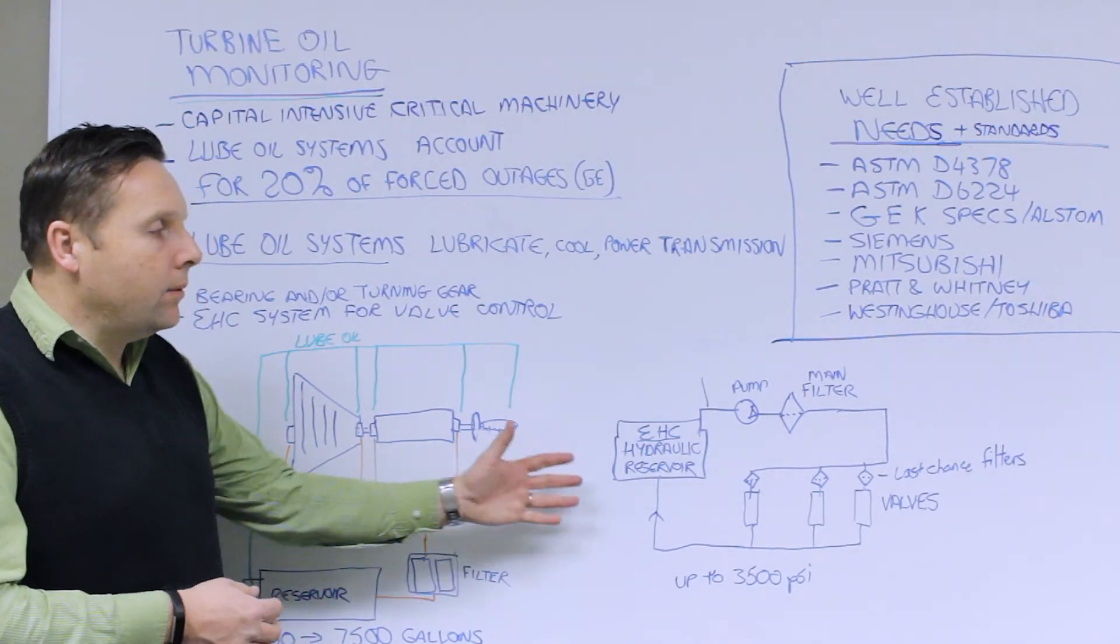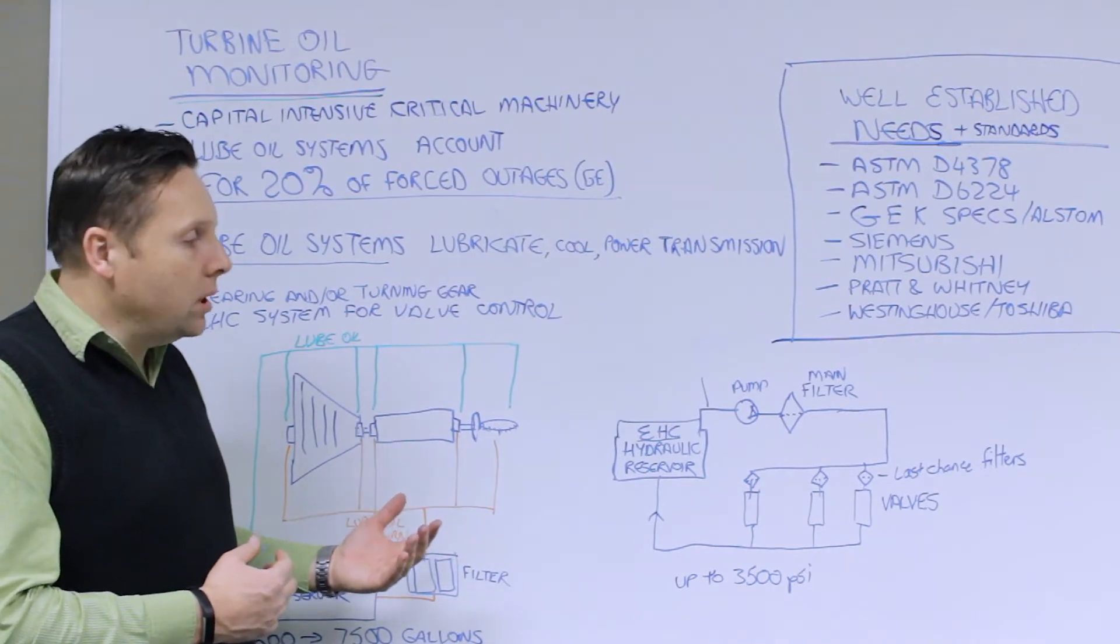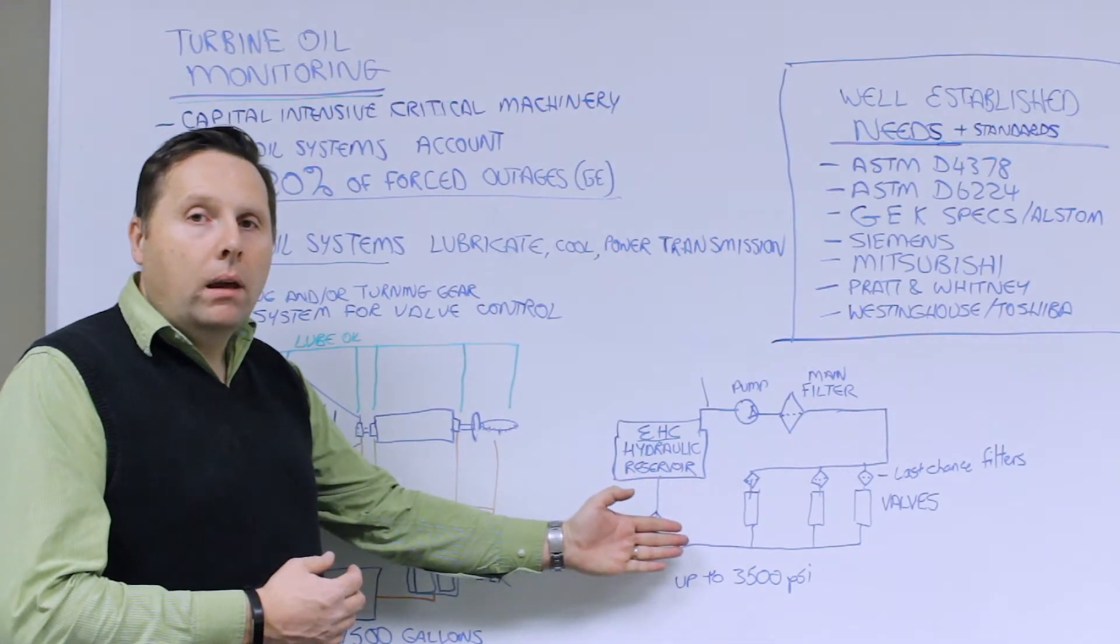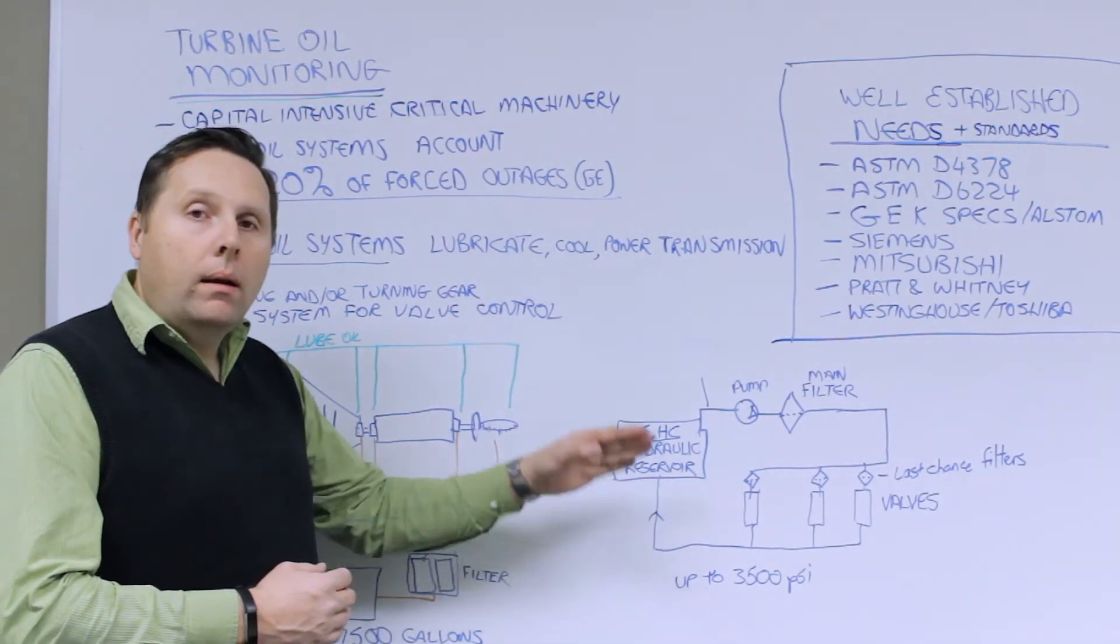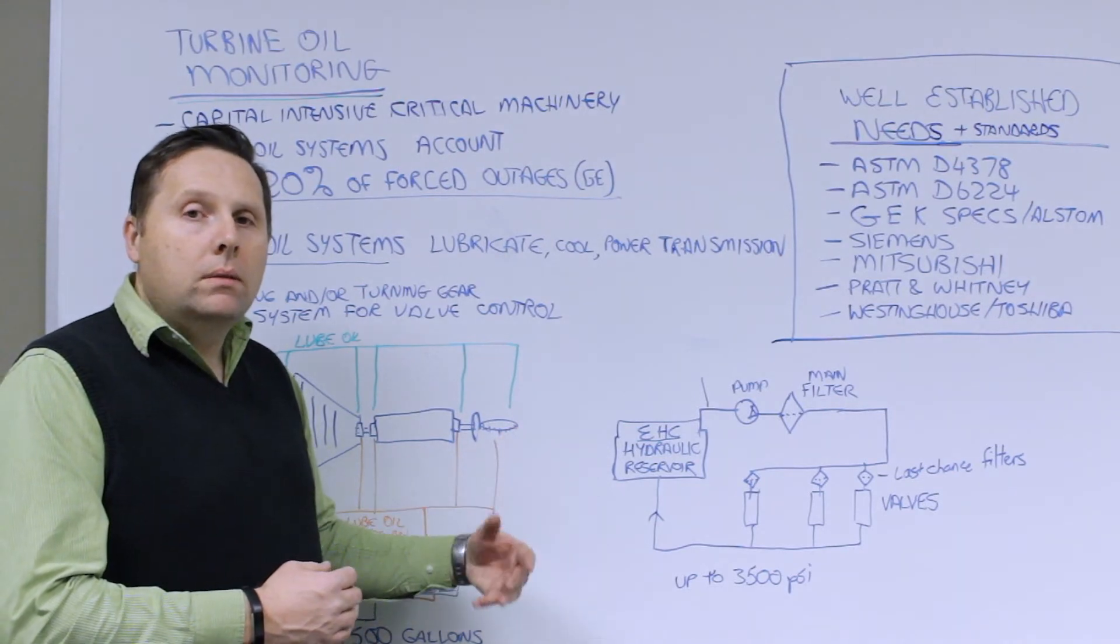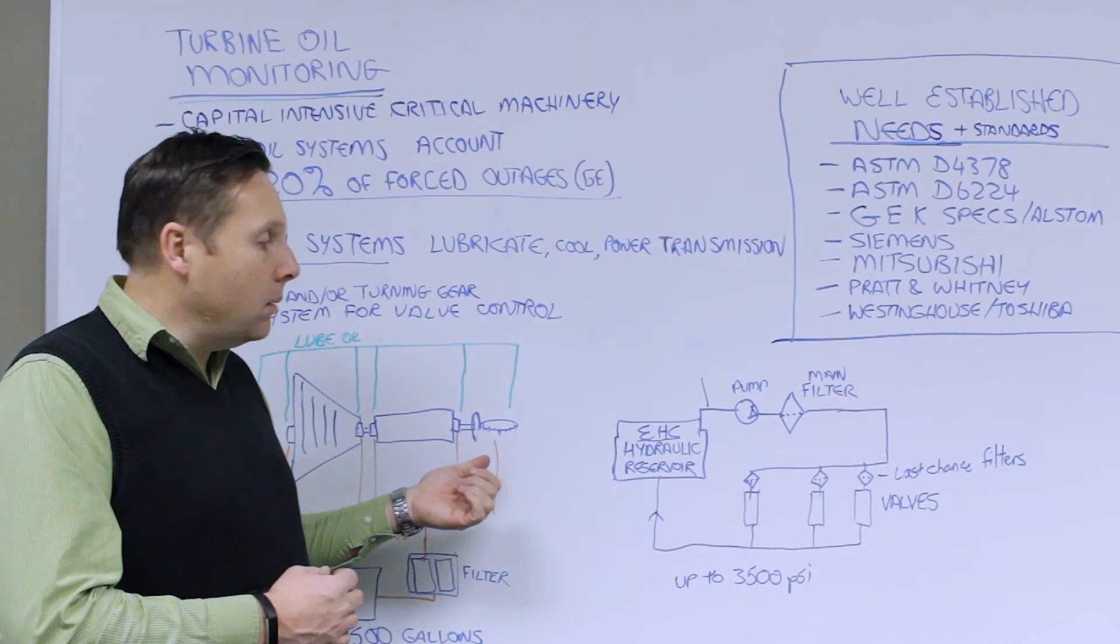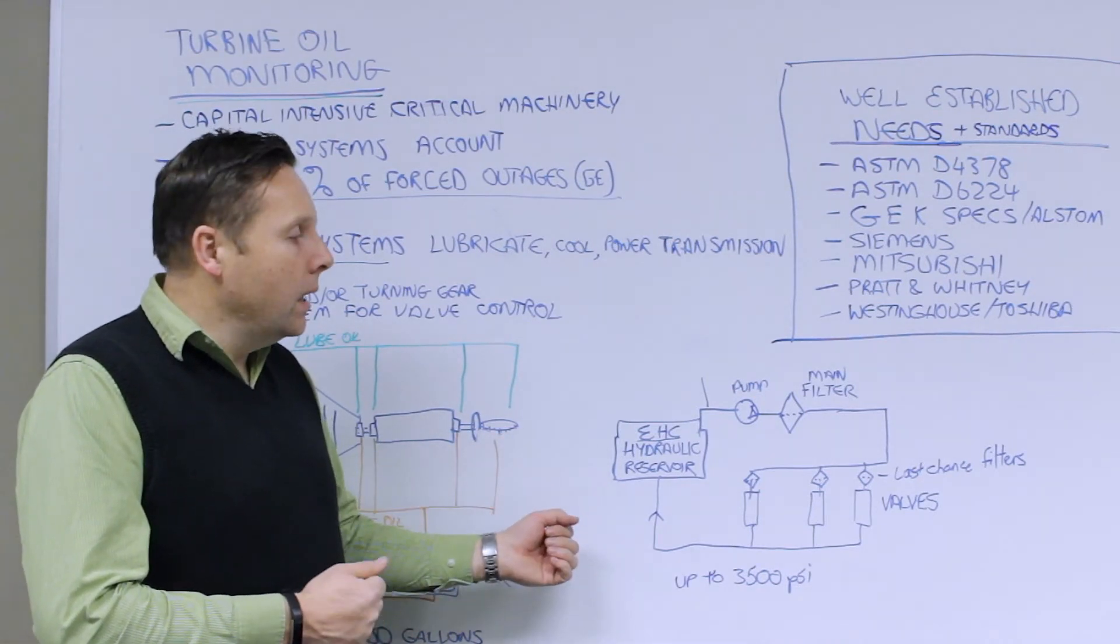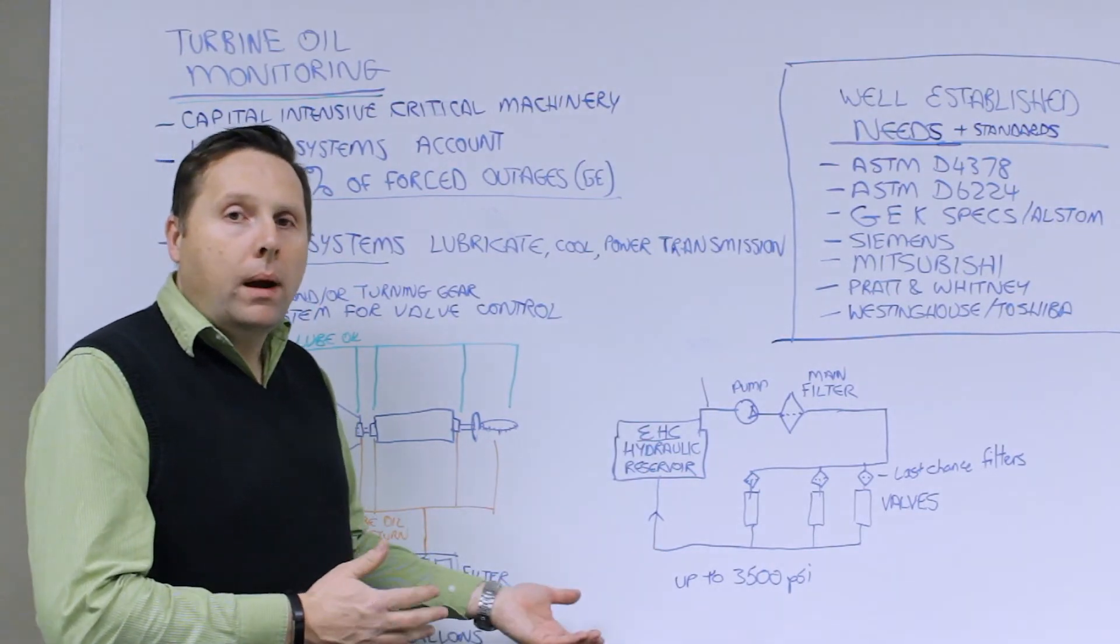Separately you can have an EHC or electro hydraulic control system. Traditionally on older steam turbines, these were a separate system that were designed to control the valve positioning for the steam. Generally consists of a fluid that was able to withstand the high temperatures that are encountered during the steam. So you'd often have a phosphate ester or Fyrquil style system on the older systems. You'll still see this on a lot of power plants today.